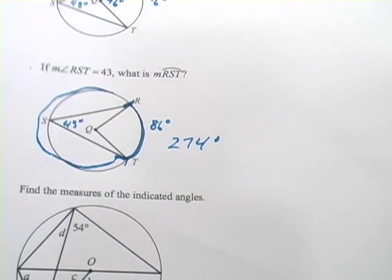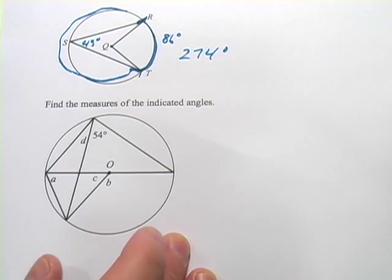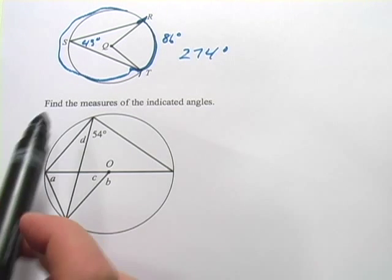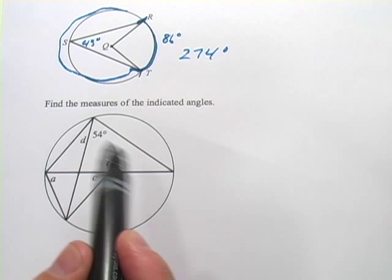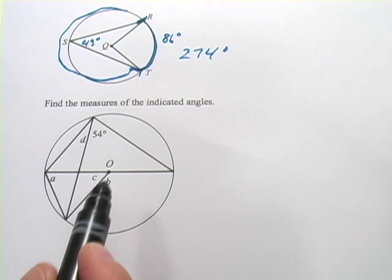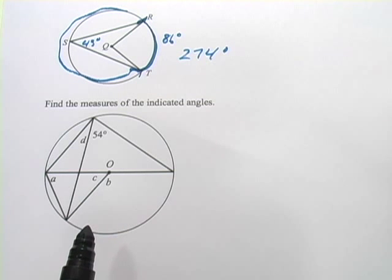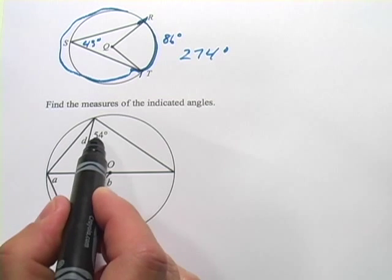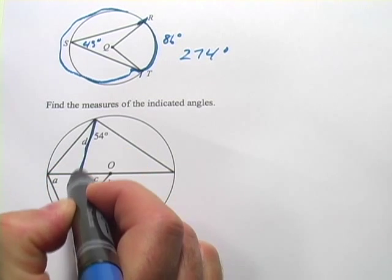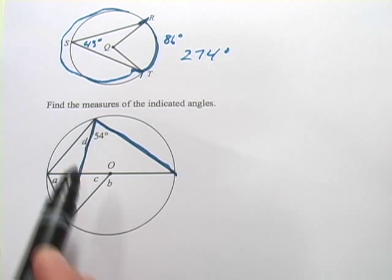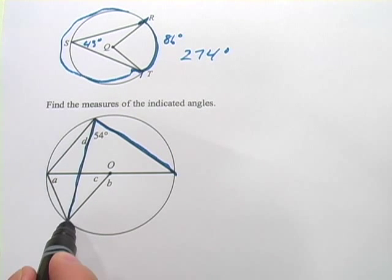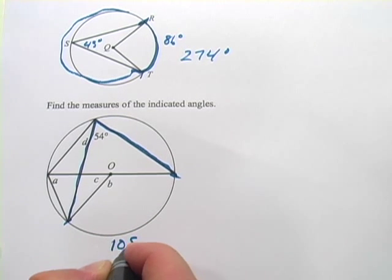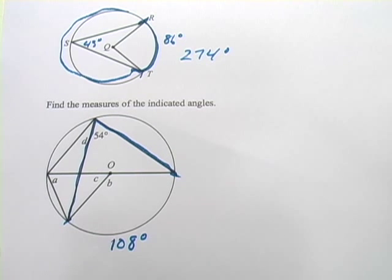All right, let's look at one more. Now this one's pretty tricky, and at first it might look a little bit impossible, but if you take it step by step, you can figure out everything in here. It says find the measures of the indicated angles, and they give you one angle, 54 degrees, and then we've got angles A, B, C, and D. So what I would do is start writing in some things that you can know about this. This angle right here is 54. It starts from the opposite end of a circle and cuts off this arc length right here, so you can know that this arc length is 108. That's double the degrees of that angle.